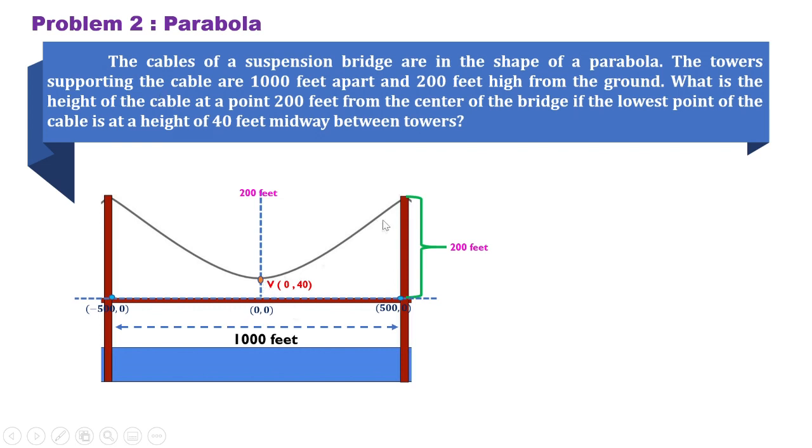Apart from the vertex, we can also say that this point is also on the parabola. Therefore, the coordinates of this point would be (500, 200). Looking at the illustration, we can use the standard form of the equation of an upward-facing parabola. We know our h, k, and that would be the vertex. Point x, y would be (500, 200) so that we can solve for 4c.